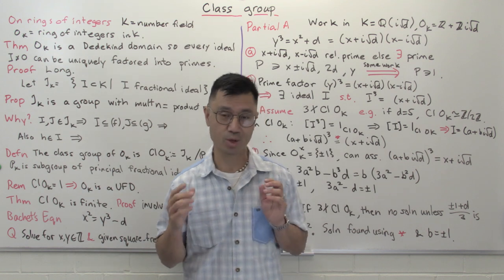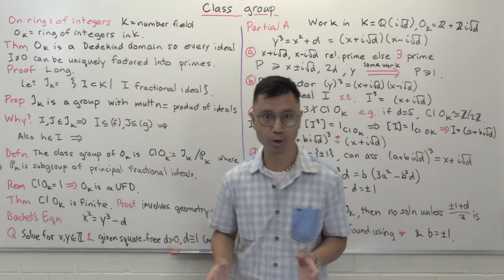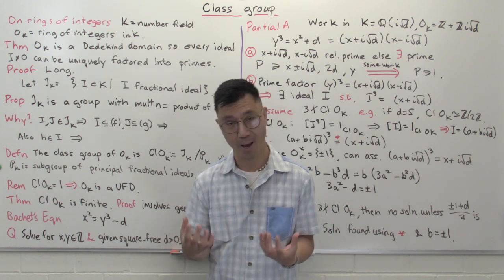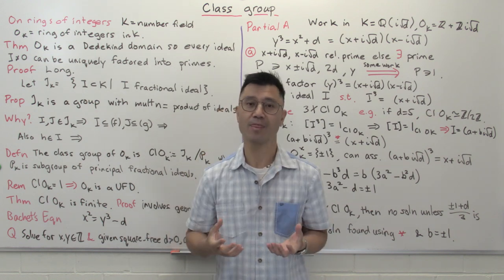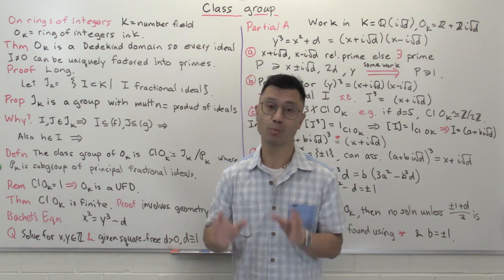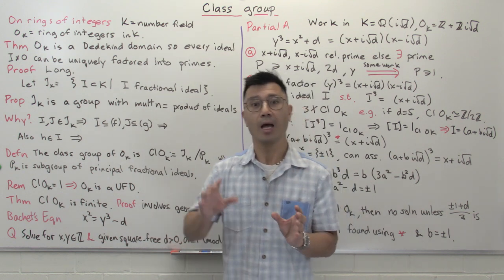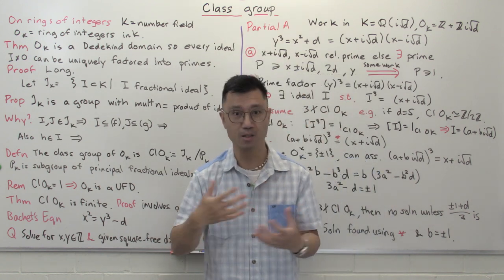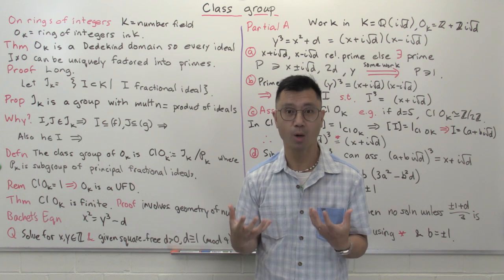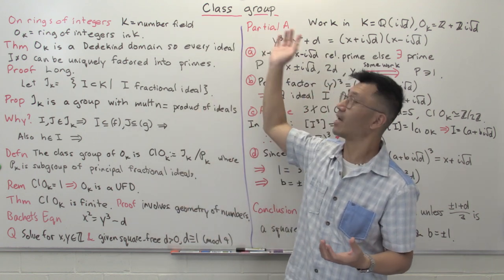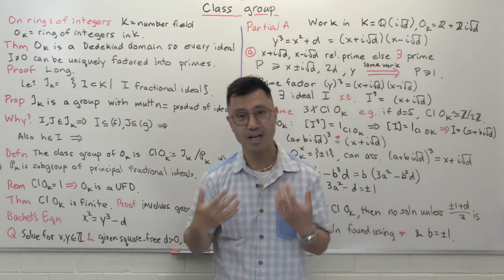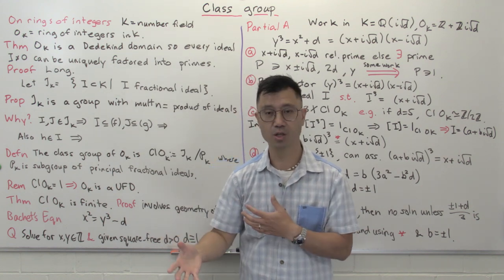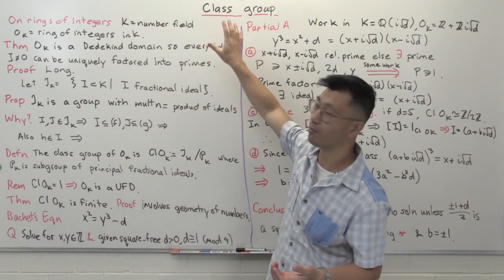Hi, I'm Daniel Chan from UNSW Sydney, welcome to another adventure in pure mathematics. The ring of integers in a number field is a Dedekind domain, which means in particular that non-zero ideals can be uniquely factored into prime ideals. In this video I want to talk about the class group, which in a sense measures how far ideals are from being principal ideals, and as such, the study of the class group is intimately connected with trying to extend arguments where you use prime factorization for integers to the case of algebraic number fields.